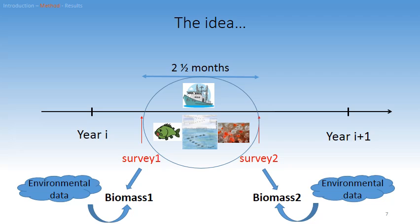Two surveys are conducted every year, one around May and one around August, leaving about two and a half months between survey periods. In that time, fish can grow, fish can move between areas, new recruitment can happen, and fish can die due to natural causes or fishing activity. By using the survey data in combination with environmental data, we can create a predicted map of the Dorosol population along the West Coast for each survey period.